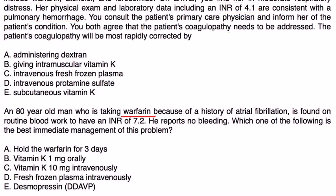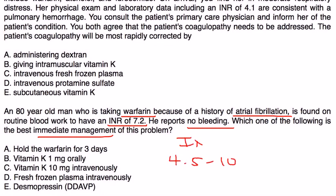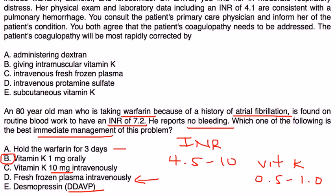Vignette 2: An 80-year-old man on warfarin for atrial fibrillation is found on routine blood work to have an INR of 7.2, with no bleeding reported. He falls in the 4.5 to 10.0 non-bleeding category. In this category, you hold the warfarin and give a low dose of vitamin K, usually 0.5 to 1 mg — answer B. Holding warfarin alone is insufficient; you also need vitamin K. 10 mg is too high, fresh frozen plasma is only for bleeding patients, and DDAVP is not part of warfarin reversal.